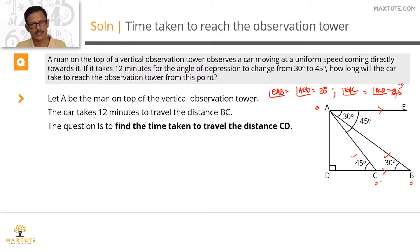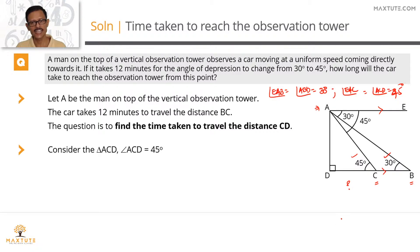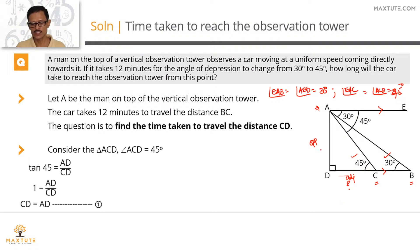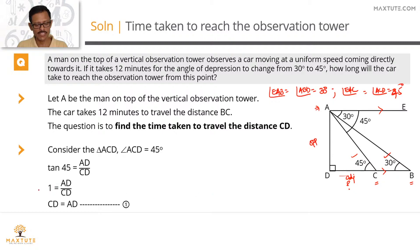It takes 12 minutes to travel from B to C. What we need to find is how long it takes to travel from C to D. In right triangle ACD, angle ACD equals 45 degrees. AD is the opposite side and CD is the adjacent side. Tan 45 equals AD divided by CD. Since tan 45 equals 1, we establish that AD equals CD.